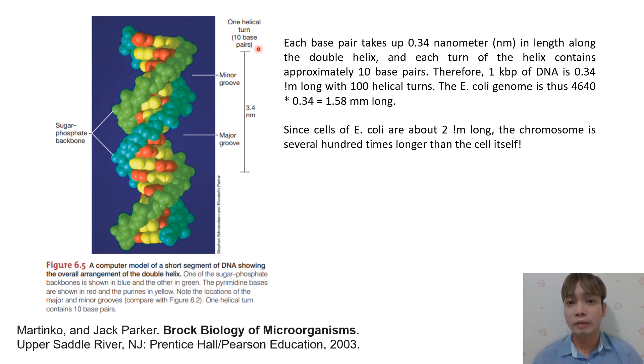So how big is 10 base pairs? How long? So each base pair, usually around 0.34 nanometers. So these are the important numbers that you need to remember. 0.34 nanometers—that is the length of one base pair.